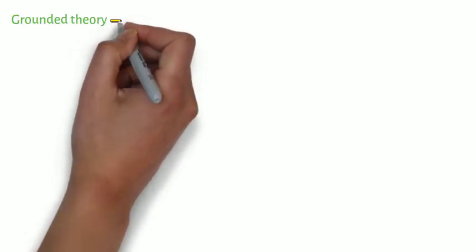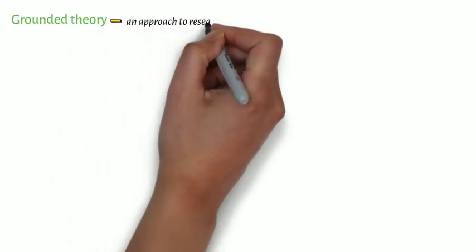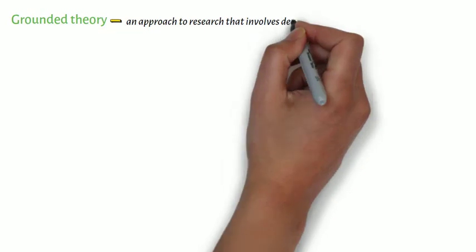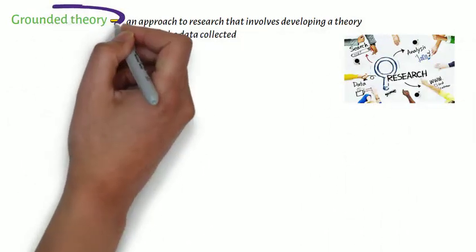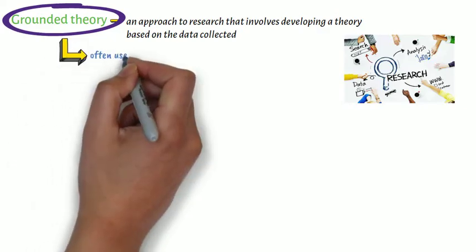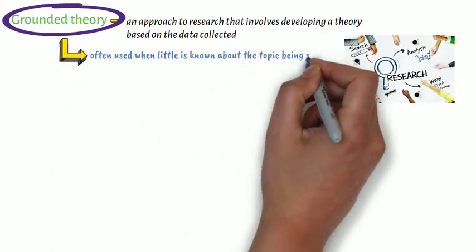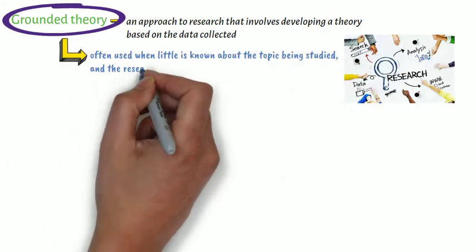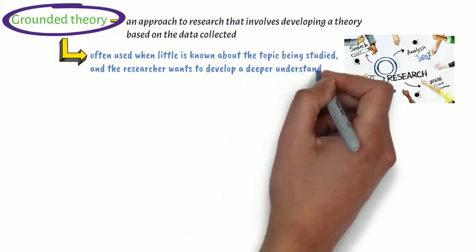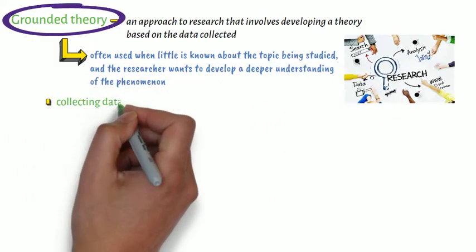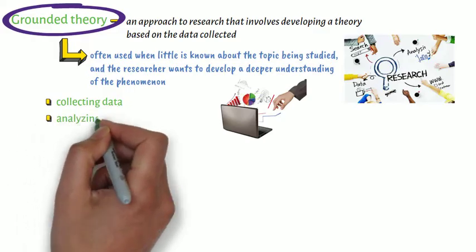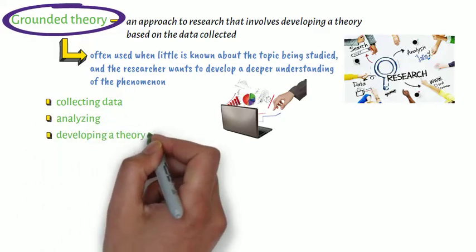Third, grounded theory. Grounded theory is an approach to research that involves developing a theory based on the data collected. This approach is often used when little is known about the topic being studied, and the researcher wants to develop a deeper understanding of the phenomenon. Grounded theory involves collecting data, analysing it, and developing a theory that explains the data.